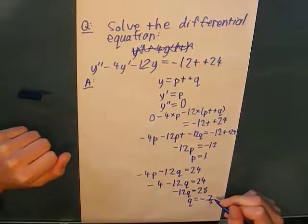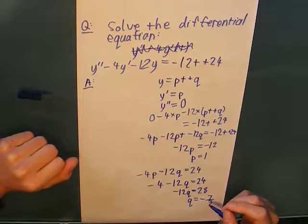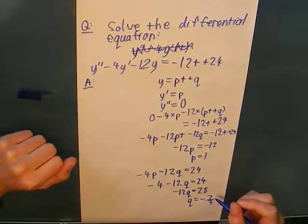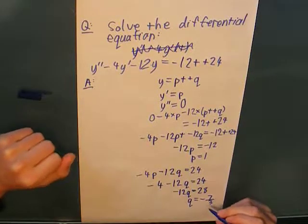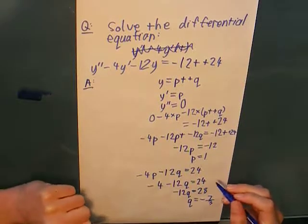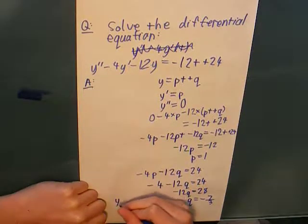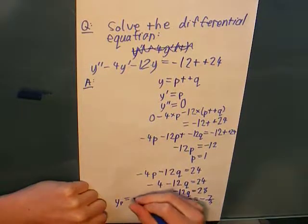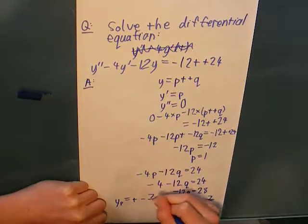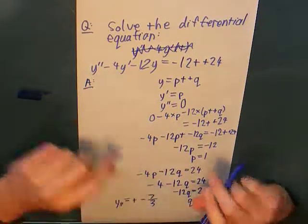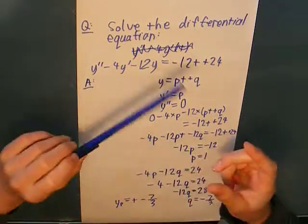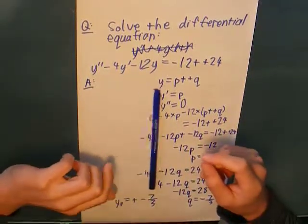So, now I know what p and q are. I've got y equals t minus 7 over 3. Substituting that into the particular solution, yp equals t minus 7 over 3. And you could substitute that back in to check.